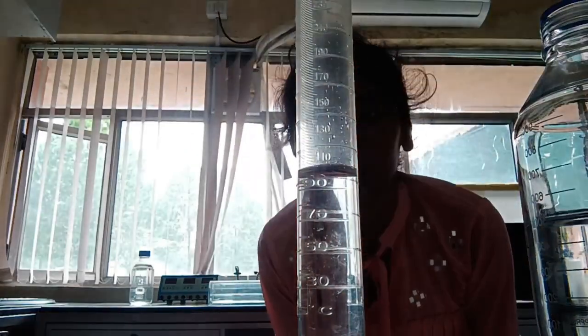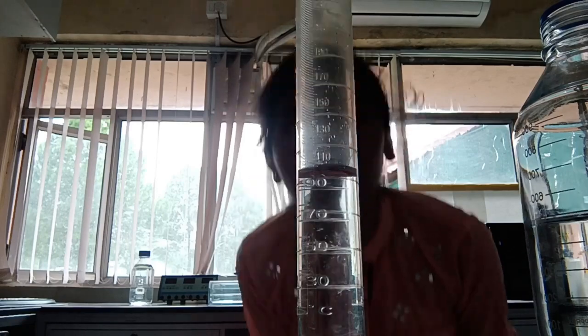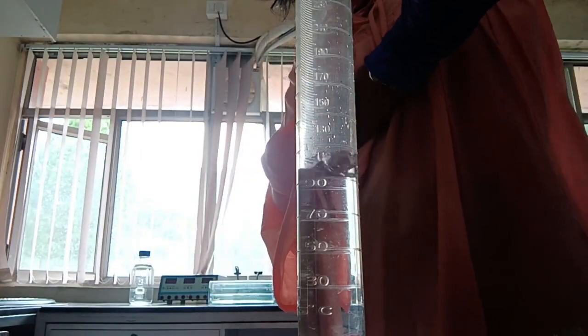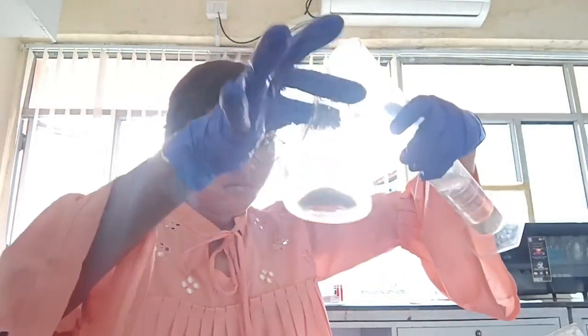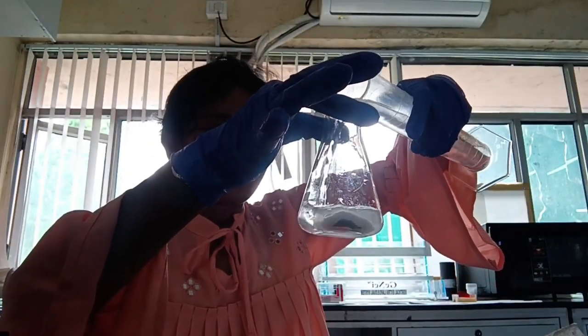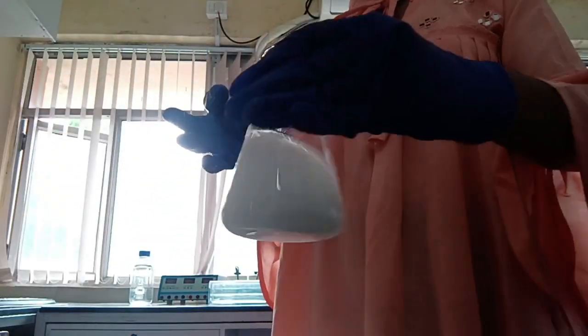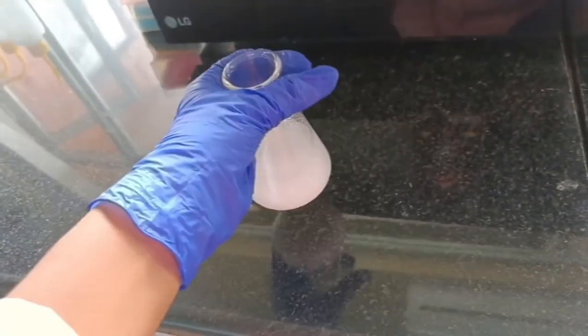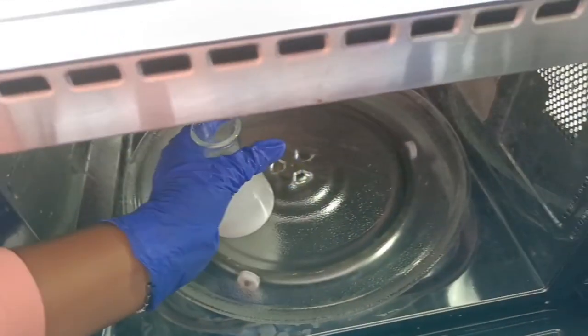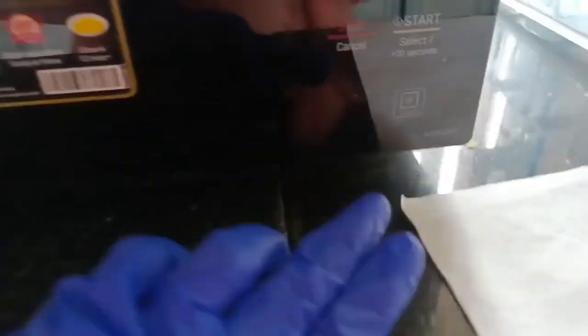Here we are measuring 100 ml buffer which we will put in this flask where there is powder and we will mix both well. Now we will heat this solution in the oven for 1.5 minutes so that the powder will dissolve and our gel will be good.